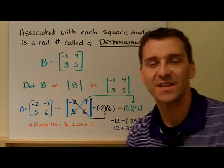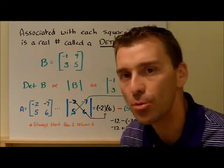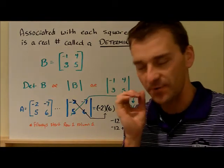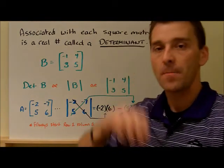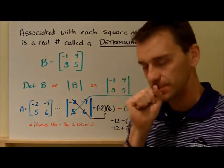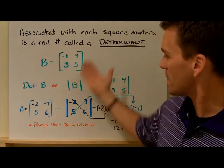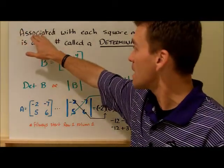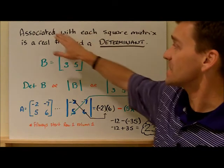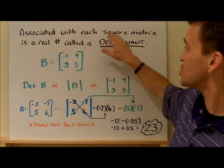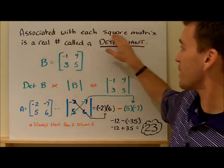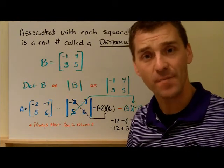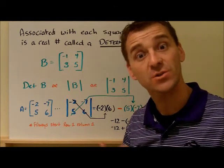Let's continue our discussion on what this thing is called a determinant of a square matrix. We talked about this in class very briefly with a two by two matrix. When we find the determinant, as we remember, associated with each square matrix — remember this is important, it has to be a square matrix — we can't find a determinant of a matrix if it's not a square matrix.